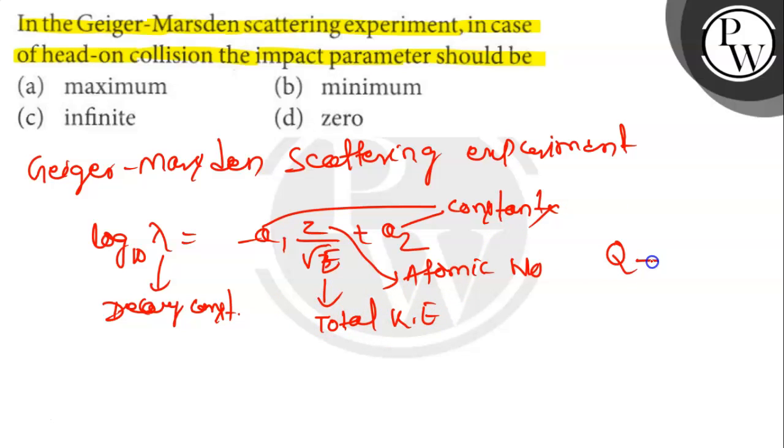Here u is approximately 5. At minimum impact parameter,